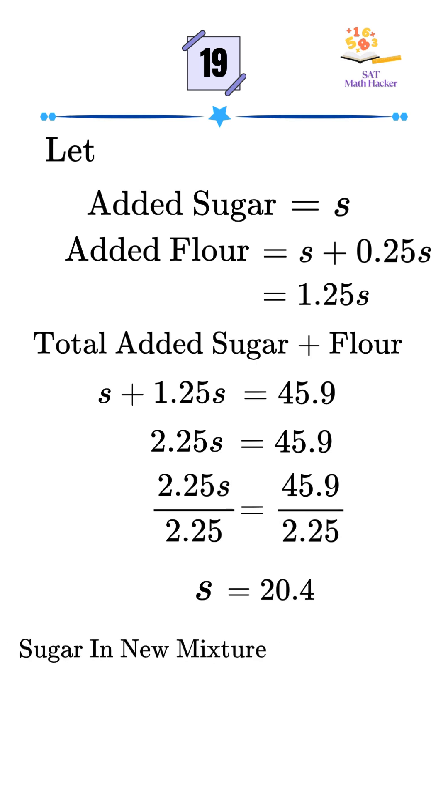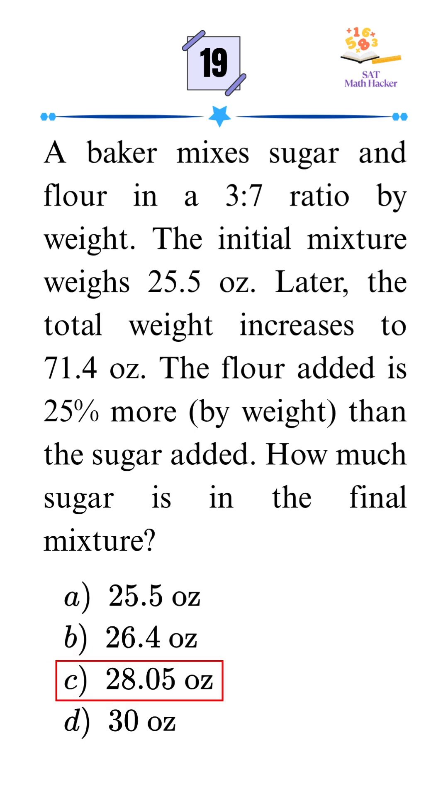So the final sugar amount is 20.4 plus 7.65 equals 28.05 ounces. That's it. The correct answer is option C. Follow for more SAT hacks.